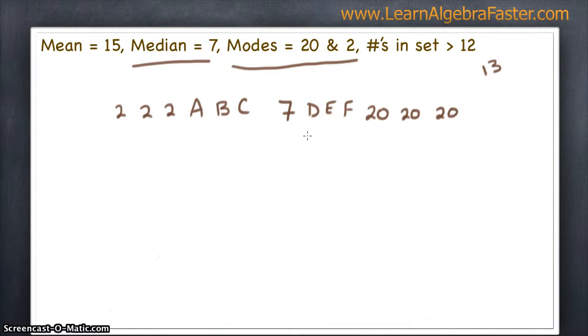Regardless, we need to try to solve for A, B, C, D, E, and F. And we do this by using them all to come up with our mean of 15. To do this, we add all the numbers. And then, we divide by how many numbers are in the set. And in this case, there are 13.